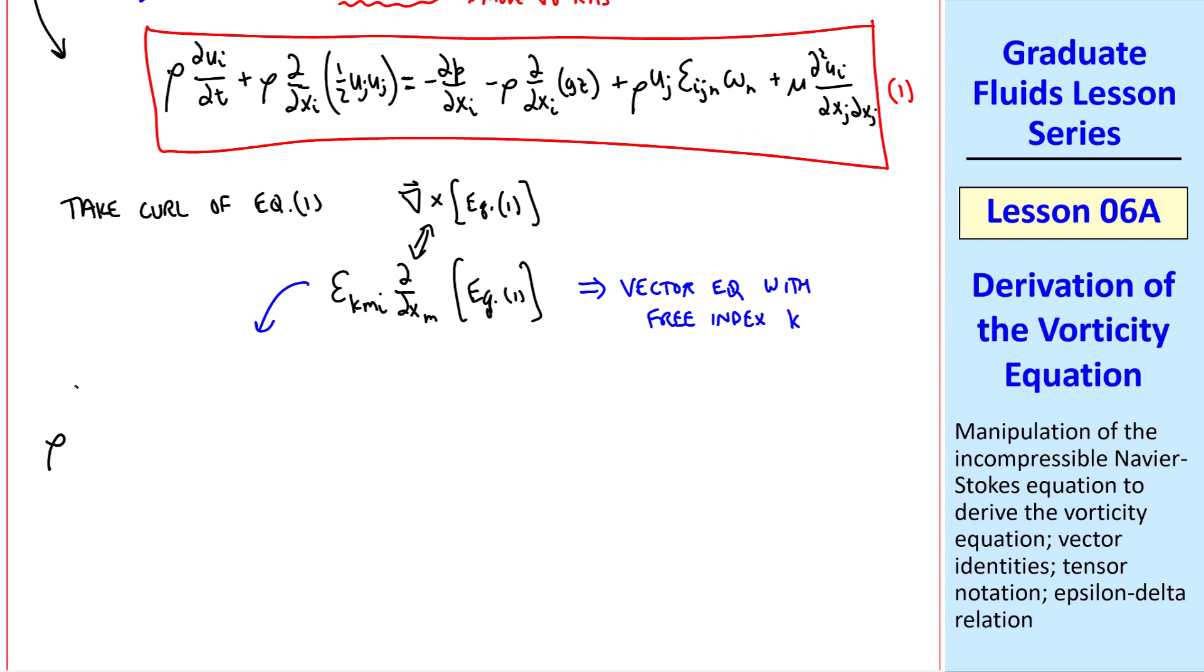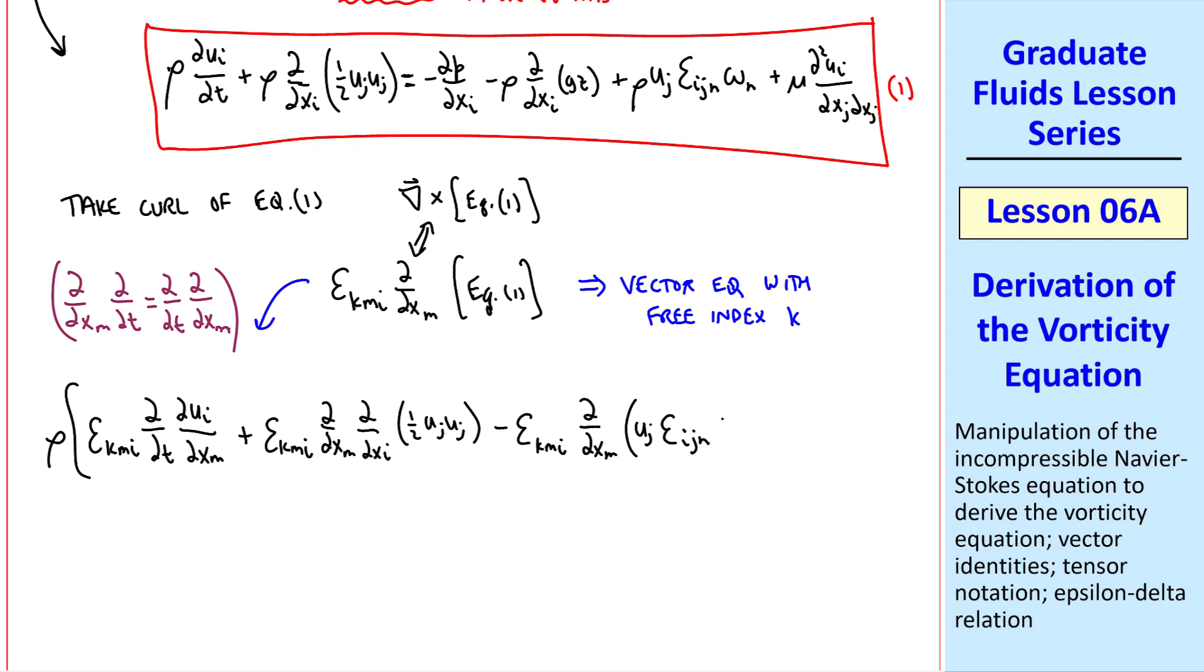So we'll end up with a vector equation with free index k in each term. When we perform this operation on each of these terms, we get rho times the quantity epsilon kmi del-del-t del-ui del-xm. Notice that I switched the order of differentiation. Del-del-xm operating on del-del-t is the same as del-del-t operating on del-del-xm. In other words, the order of differentiation doesn't matter. The second term is epsilon kmi del-del-xm del-del-xi of 1 half uj uj. Notice that in this term, we're summing over j, i, and m, still leaving k as a free index. We'll put this term with the vorticity vector on the left. So our third term is epsilon kmi del-del-xm uj epsilon ijn omega n. And we'll close the brackets. We'll number these terms 1, 2, and 3.